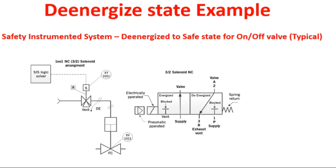Whenever any process condition arises causing a trip or moving the system to the safe state, the solenoid valve gets de-energized and the instrument air connection switches to the exhaust port. That means the pressure inside the actuator body is vented to the atmosphere, the actuator loses its power to hold the valve in the open position, and by means of spring tension the valve goes to the closed position.